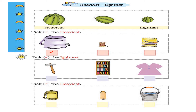Then tick the lightest — we have to find out which is lightest. Is this hammer the lightest? No. Is this bookshelf the lightest? No. Is this small shirt the lightest? Yes, this small shirt is the lightest, so I am going to put a tick mark inside this box.